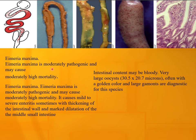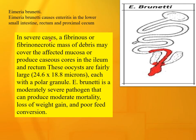Eimeria maxima is moderately pathogenic and may cause moderately high mortality. It causes mild to severe enteritis, sometimes with thickening of the intestinal wall and marked dilatation of the middle small intestine. Intestinal content may be bloody. Oocysts are very large, 30 to 20 microns, often with a golden color. Large gamonts are diagnostic for this species.